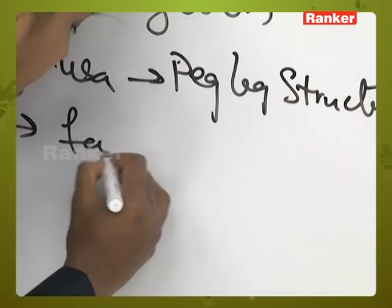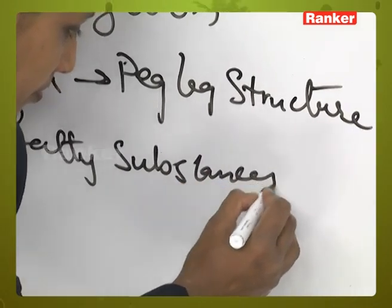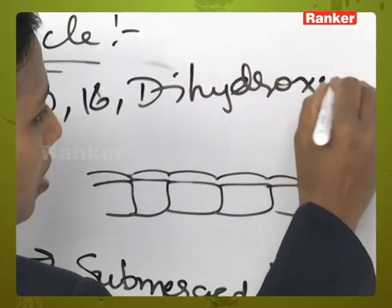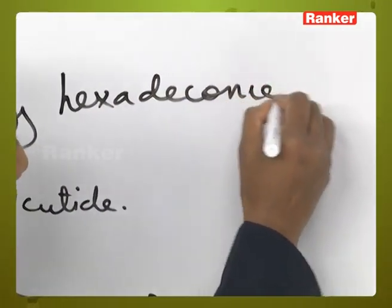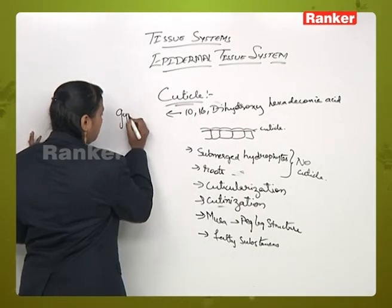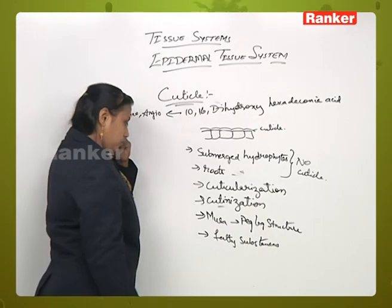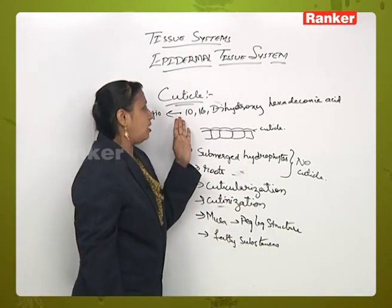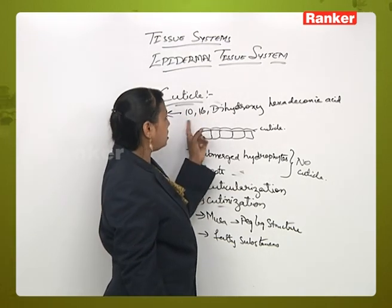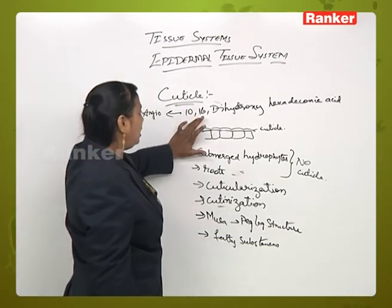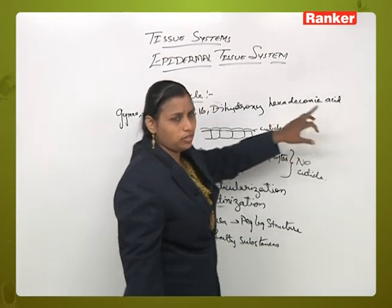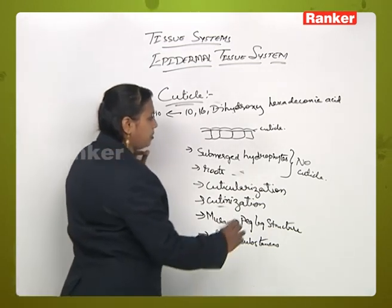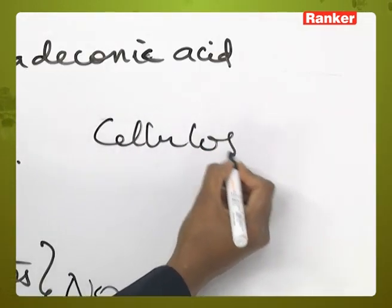Cutin is formed mixed with many fatty acids and fatty substances. Normally cuticle is formed by the mixture of fatty substances. But in case of angiosperms and gymnosperms, the composition of cuticle is because of the chemical 10,16-dihydroxyhexadecanoic acid, due to which the formation of cuticle occurs. The cell wall of the epidermis is made up of cellulose and pectin.